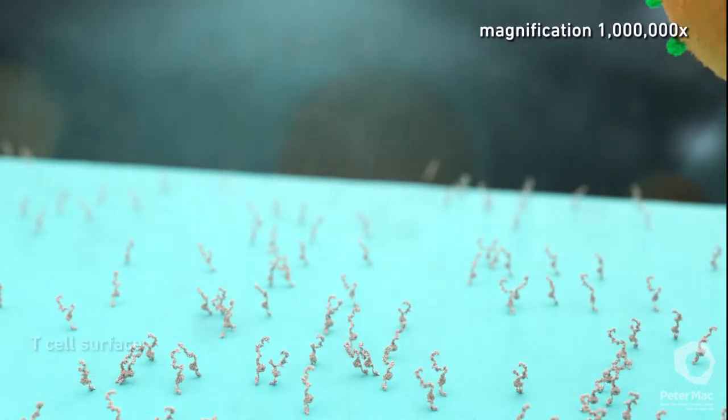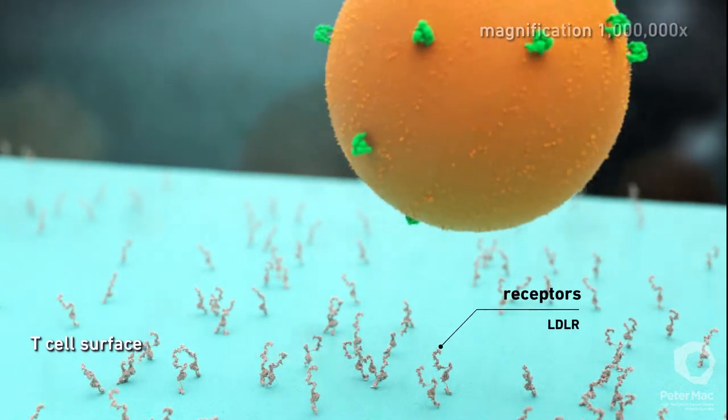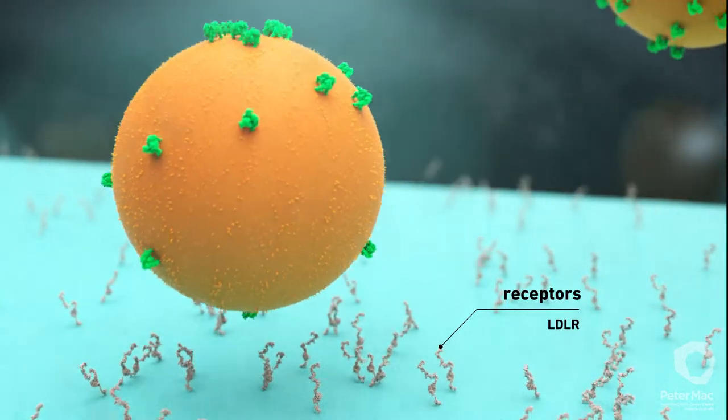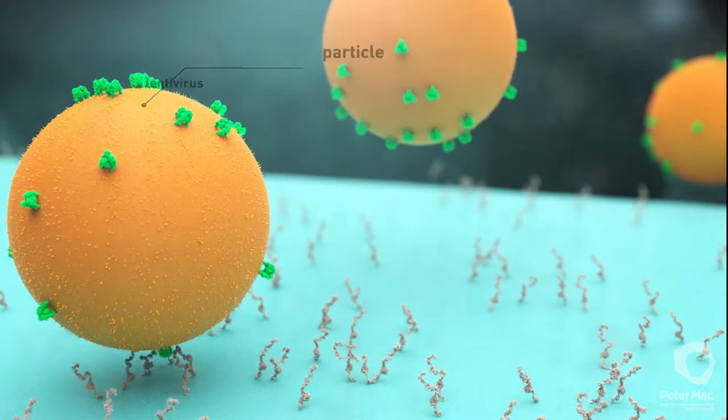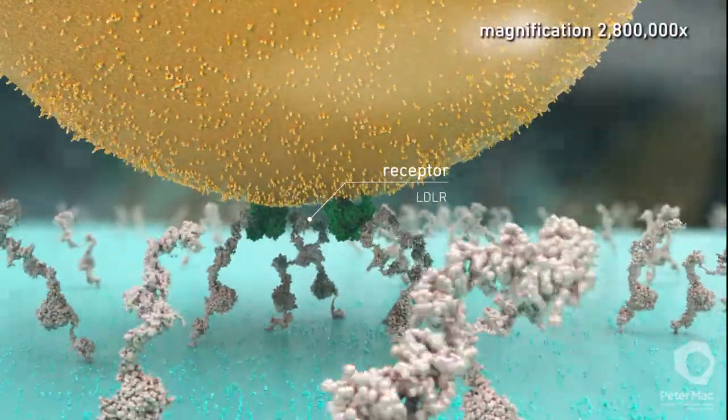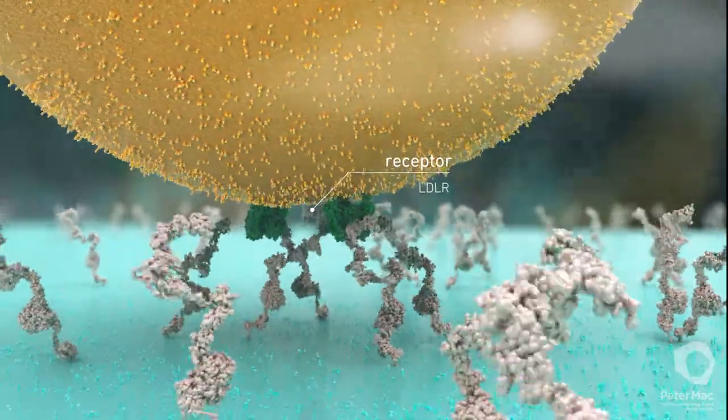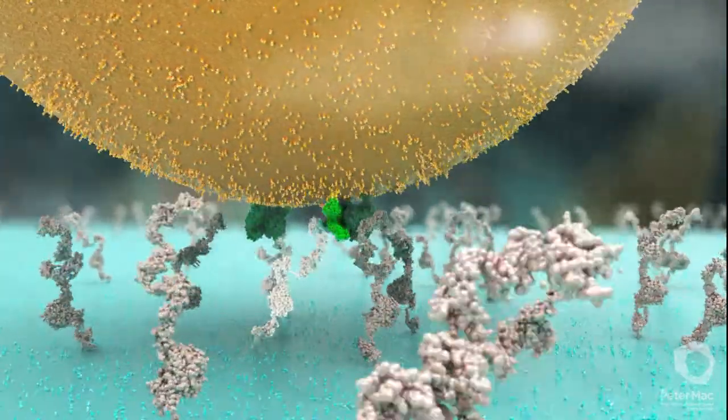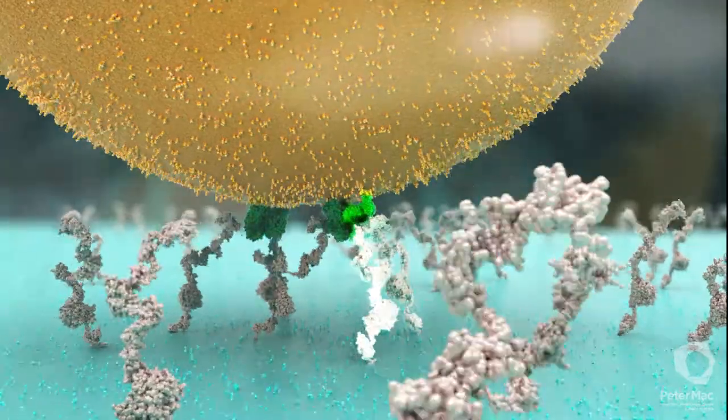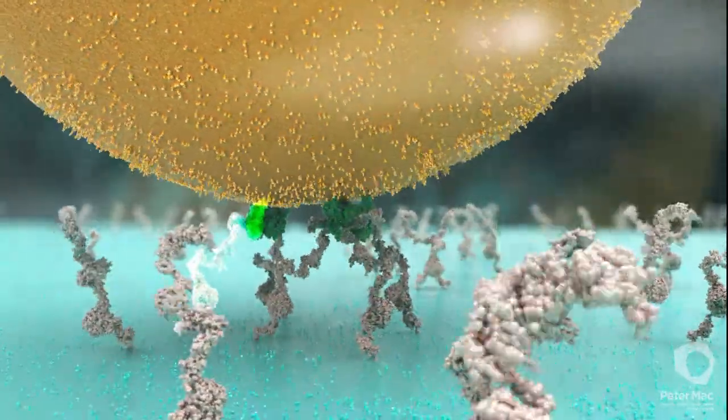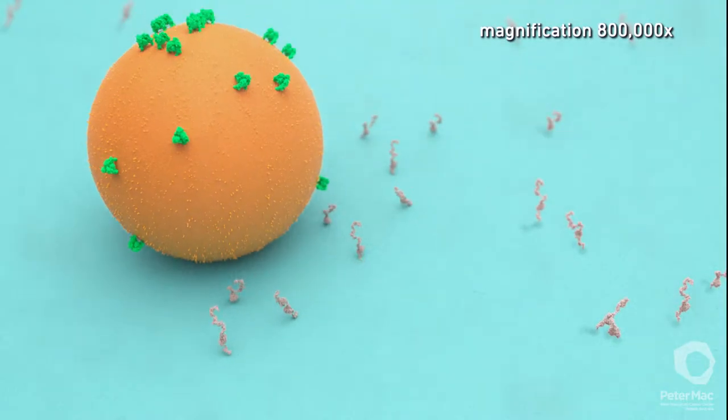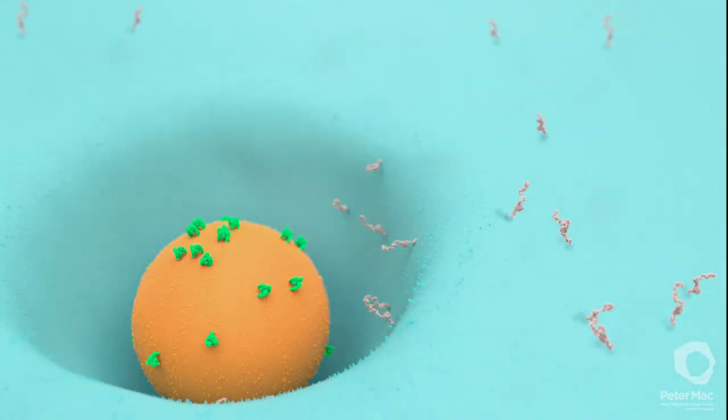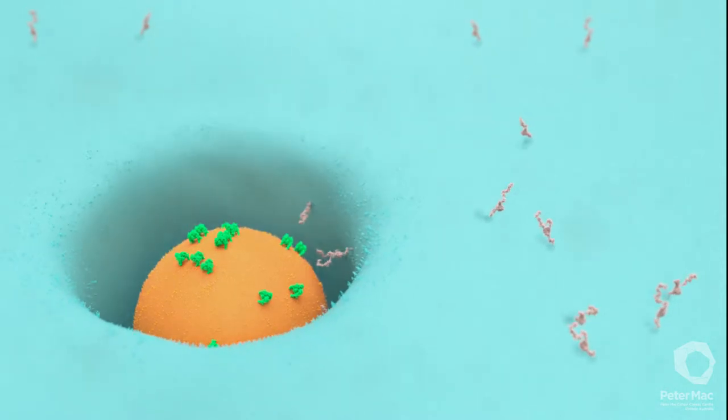We are now looking at the magnified T cell surface with some different receptors. The special particles make contact. The particles bind to the receptors on the T cell surface. The particles are then taken inside, introducing genetic instructions that tell the cells what to do.